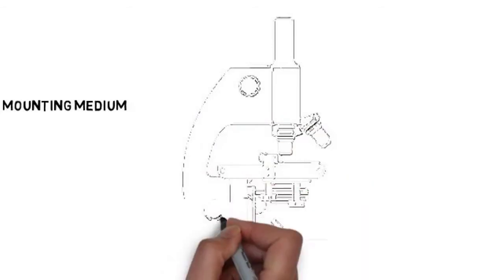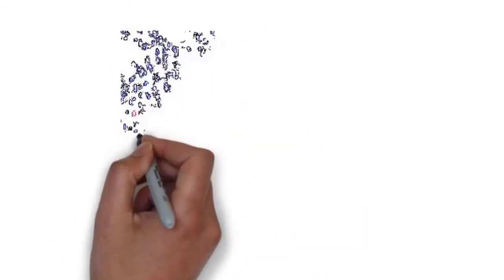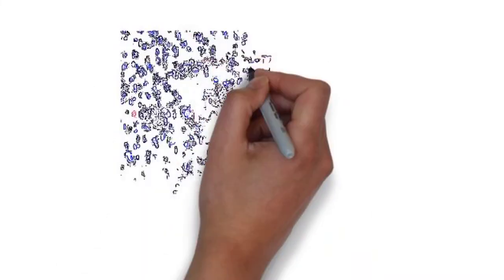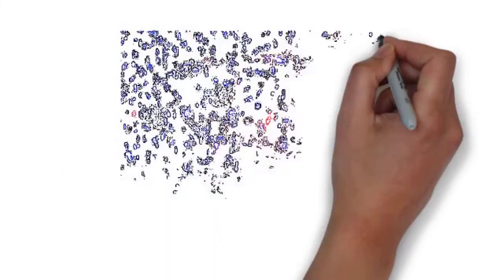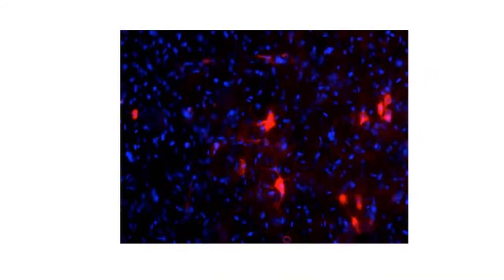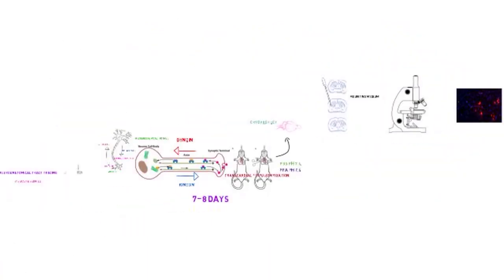The finished slides are viewed in a fluorescent confocal microscope. Fluorescently tagged tracers can be easily visualized with fluorescence microscopy without any additional processing. This section contains anterograde fluororuby labeling in red and DAPI staining nuclei in blue.